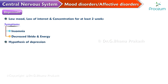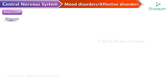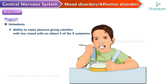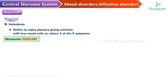The hypothesis of depression upon which most of the current drugs are based is the monoamine hypothesis. A diagnosis of depression is made when a patient has anhedonia — the inability to enjoy pleasure-giving activities — with low mood, and at least five of the nine symptoms of the SIGCAPS.